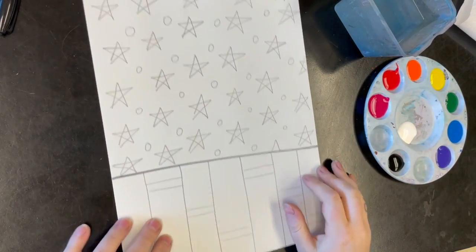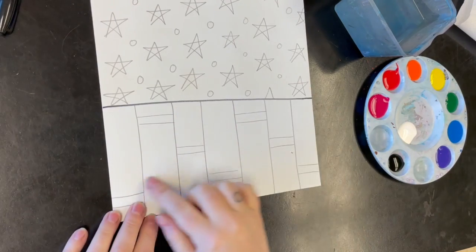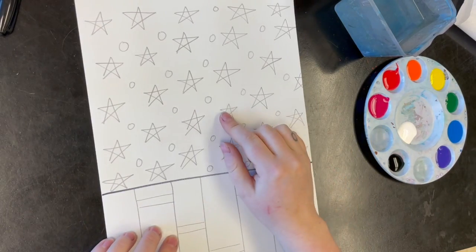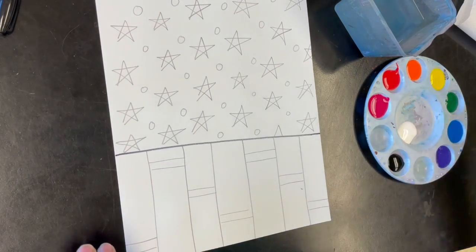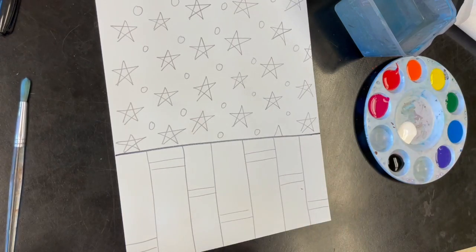Now that my whole pattern is done—I did stripes on the bottom, stars and polka dots on the top—I'm going to use paint to paint my whole piece of paper, carefully painting the patterns that I've done.